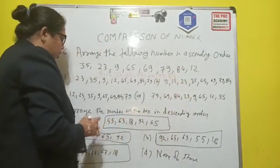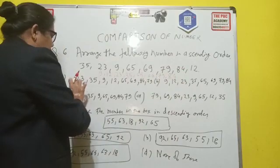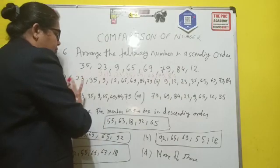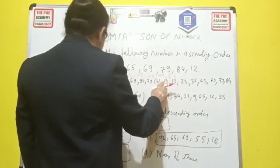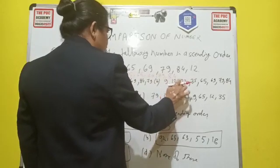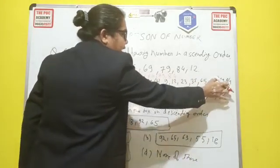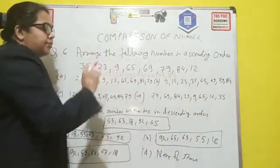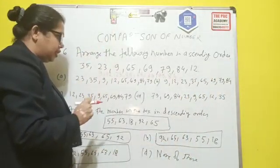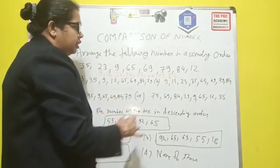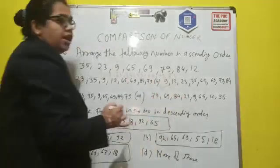So which is your answer is matching children. You can see the options are first is A, 23, so not matching. Option B is 9, 12, 23, 35, 65, 69, 79, and 84. So option B is only matching children. Rest all is not matching. So option B is your correct choice.